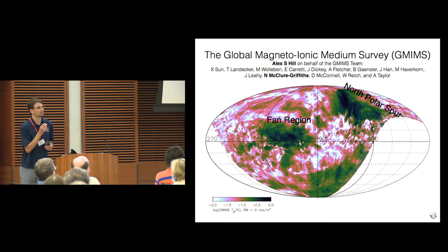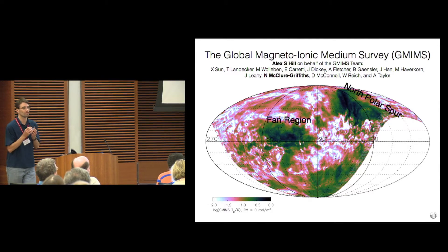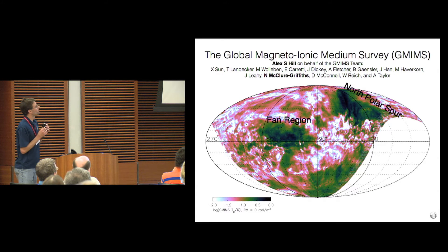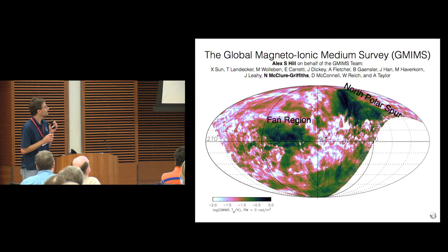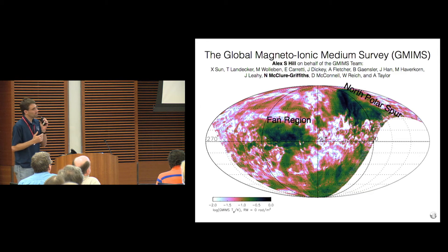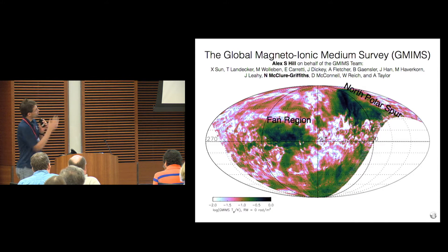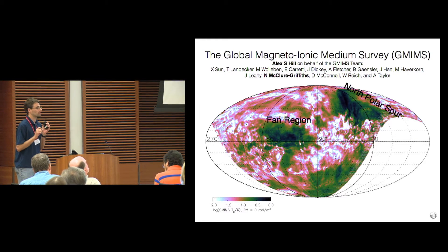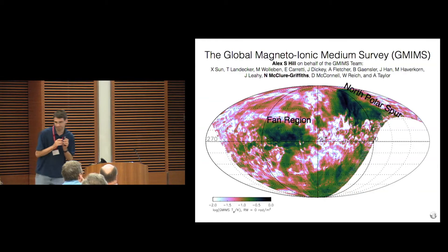My name is Alex Hill. This poster represents the GMIMS Consortium, the Global Magneto-Ionic Medium Survey, in which we have an all-northern sky map of diffuse polarized emission from the Milky Way from 1,300 to 1,800 megahertz. The poster highlights results from two regions: the north polar spur and the fan region, which are the dominant features in the polarized sky. For the north polar spur, we find the high-latitude part must be local, whereas the lower part might be a larger-scale galactic feature. The fan region, generally thought to be very local at high frequency, actually has to be a very large, many-kiloparsec-scale structure tracing galactic structure, particularly from the Perseus arm.